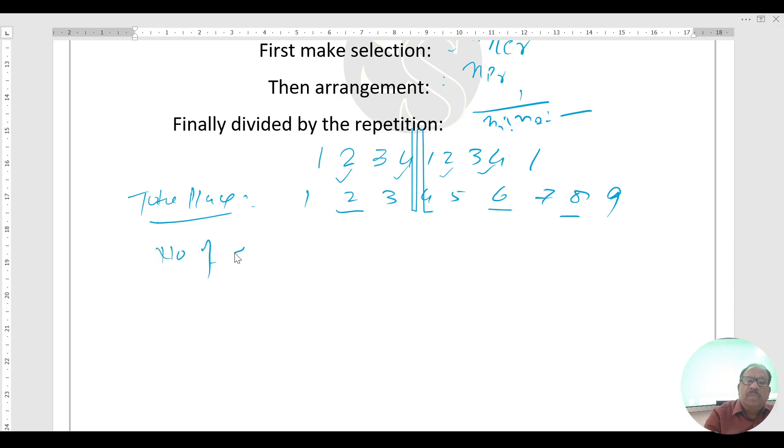Number of even digits: 2, 2, 4, 4. You have a total 4. Number of odd digits: 1, 1, 3, 3, and 1. Total over here 5. Total over here 4.